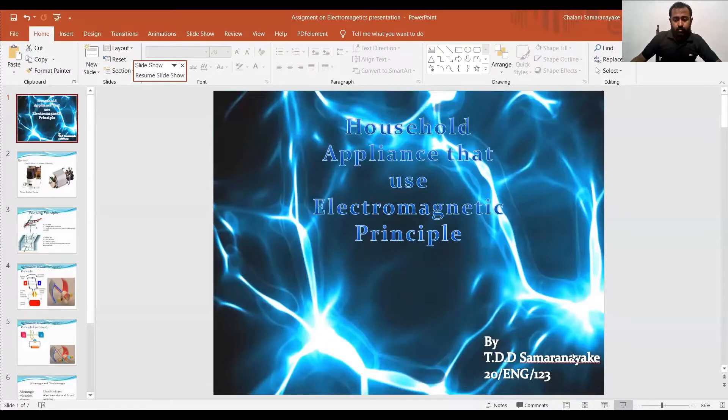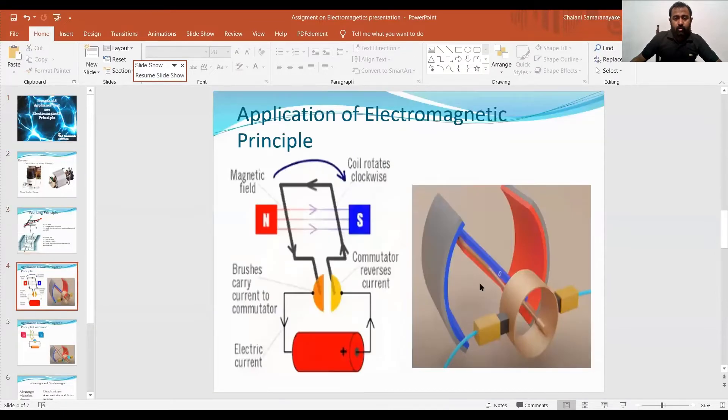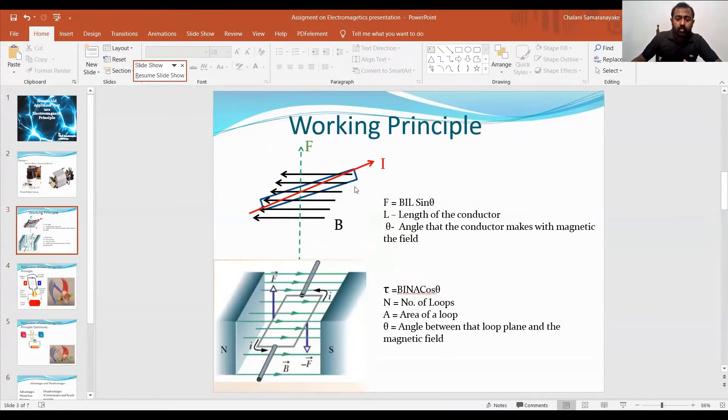The working principle involves two main principles. One is the force acting on a conductor placed in a magnetic field and the other is the torque existing on a conductor loop placed in a magnetic field. The force is given by BIL sin theta and torque is given by BIAnN cos theta. B is the magnetic density of the magnetic field and I is the current that flows through the conductor.